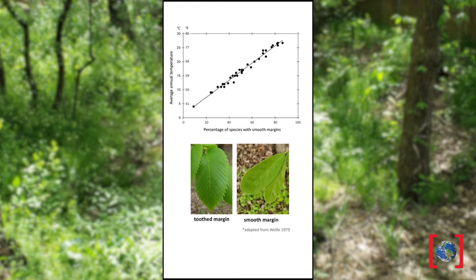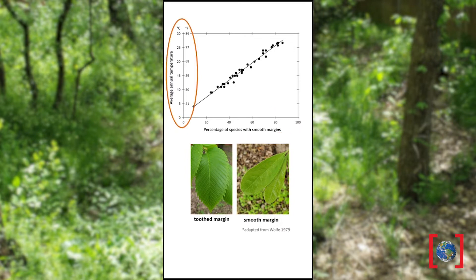After scientists realized there's a relationship between leaf margins and temperature, they went out and collected data from flora in all sorts of climates. By graphing the percent of smooth-margin species in a flora against the average annual temperature, they were able to show a really strong linear relationship between the two — meaning the points follow a line. So the more species with smooth margins, the higher the temperature. Having a strong known relationship like this allows us to make predictions.